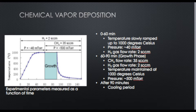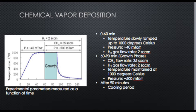This slide shows a schematic of the CVD reaction with experimental parameters measured as a function of time. From zero to 60 minutes, the temperature is slowly raised to 1000 degrees Celsius under very low pressure of around 40 millitorr, with a hydrogen flow rate of 2 standard cubic centimeters per minute. At around the 60-minute mark, methane gas is introduced at a flow rate of about 35 standard cubic centimeters per minute, with hydrogen still flowing and pressure increased to about 500 millitorr.